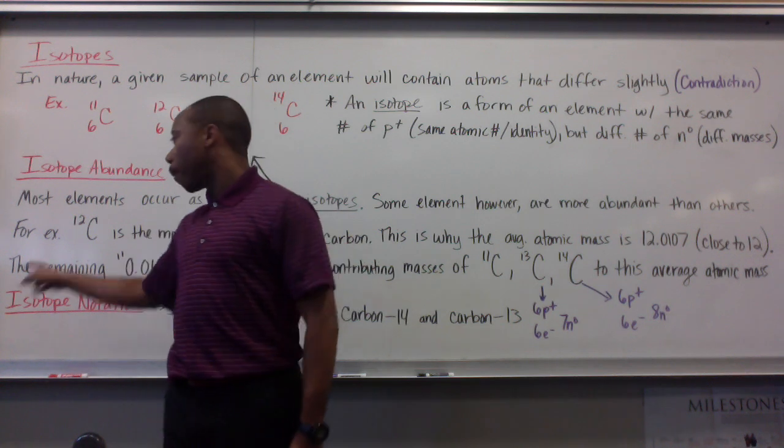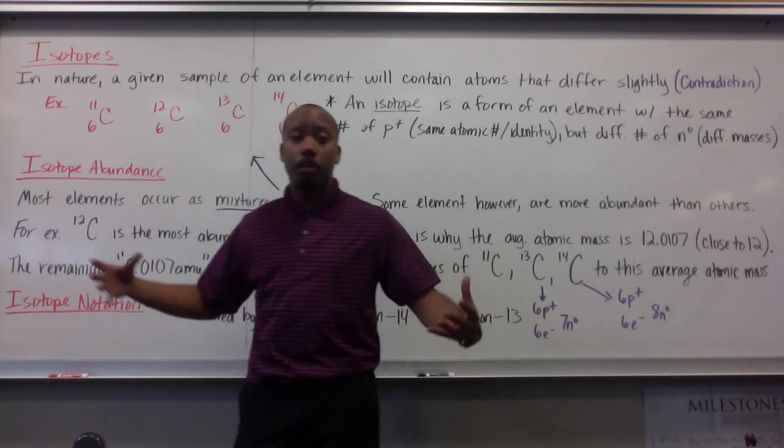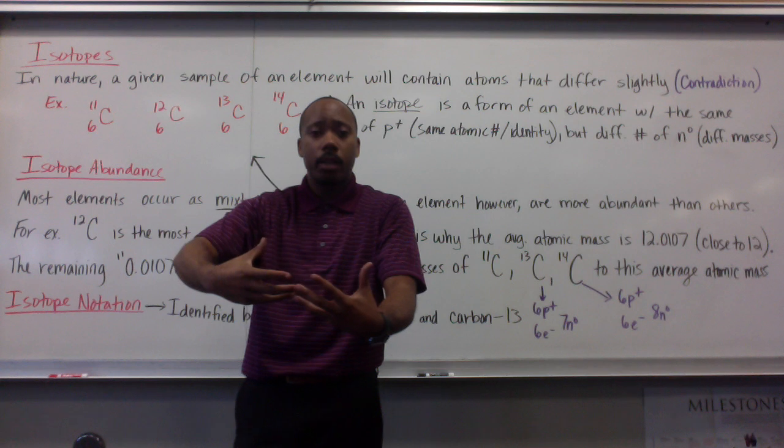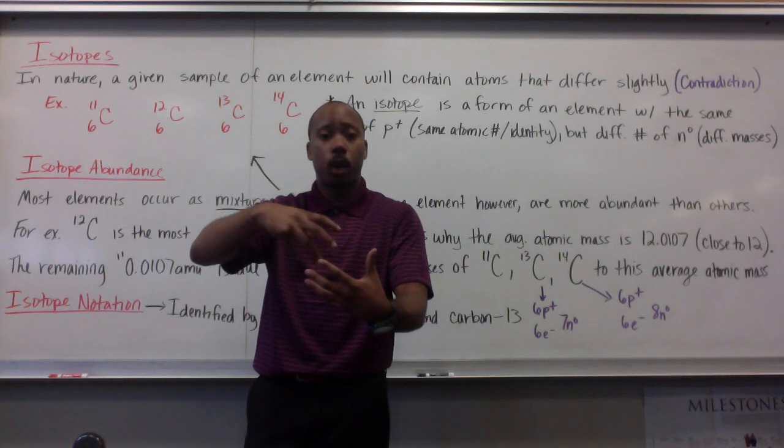For example, for carbon, it's carbon 12. Carbon 12 is the most abundant. So, if I picked up a sample of carbon, most of it would be carbon 12. That's what I mean by abundance.